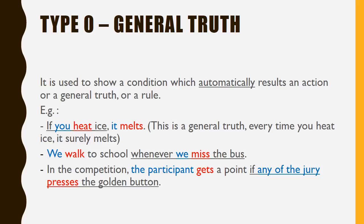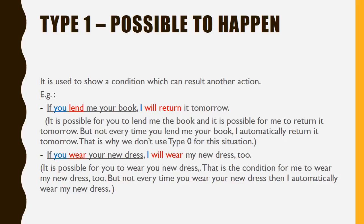Type 0: General Truth. It is used to show a condition which automatically results in an action, a general truth, or a rule. For example: 'If you heat ice, it melts' — this is a general truth, every time you heat ice it surely melts. Another example: 'We walk to school whenever we miss the bus.' And: 'In the competition, the participant gets a point if any of the jury presses the golden button' — that is a rule.